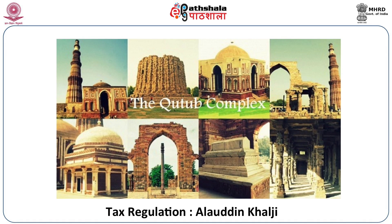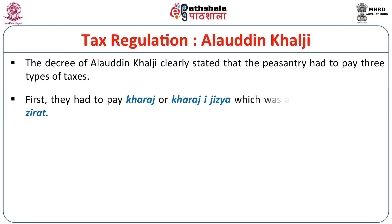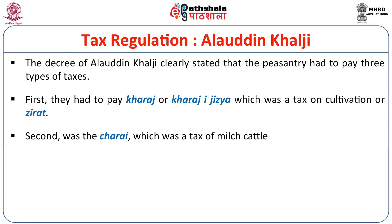The recorded part starts with the time of Alauddin Khalji, when a large part of North India was brought under a uniform taxation system. This has been recorded by historians like Ziauddin Barani. The decree of Alauddin Khalji clearly states that the peasantry had to pay three taxes: first, the Kharaz, a tax on cultivation; second, the Charai, a tax on milch cattle; and third, the Gharai, a tax on houses.